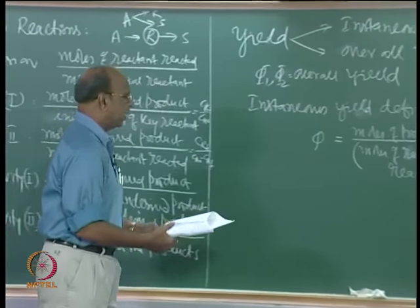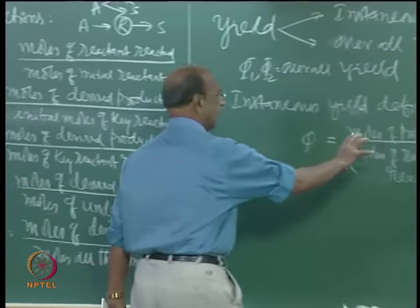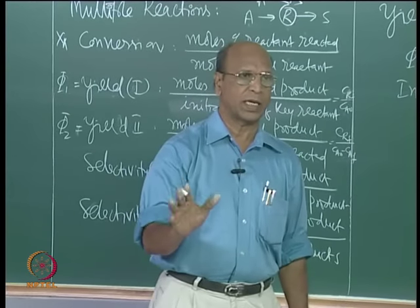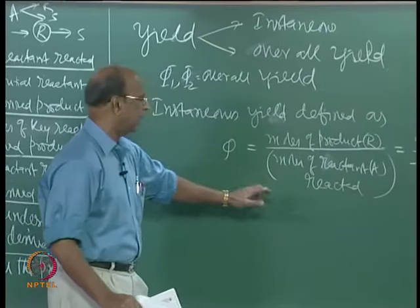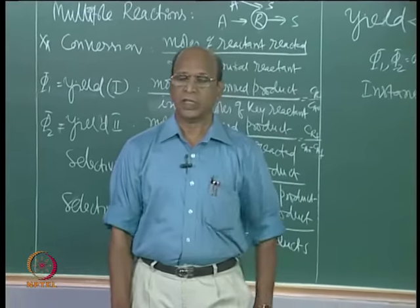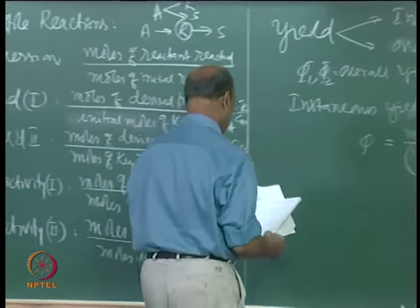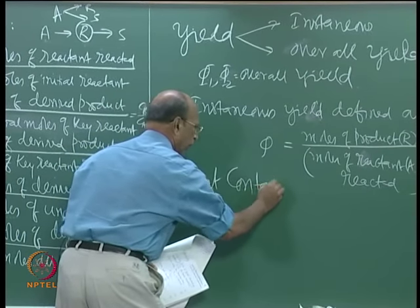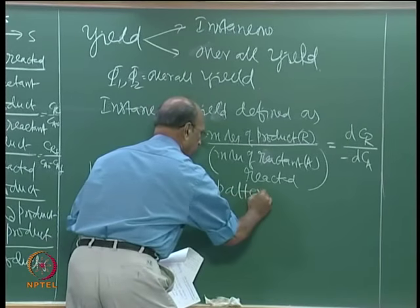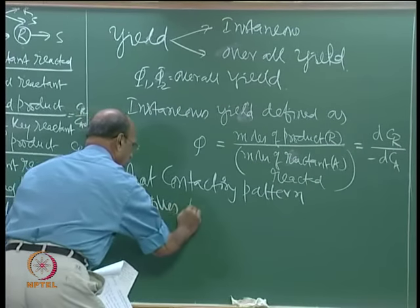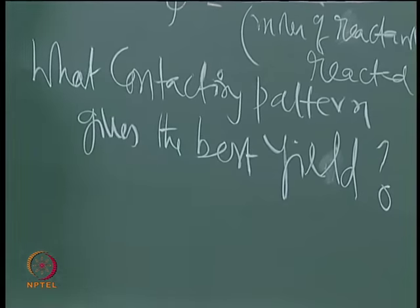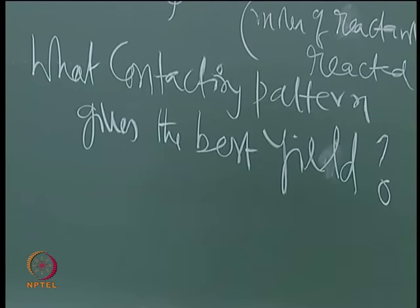This is the instantaneous yield. We have to find it depending on the reactor — whether plug flow, mixed flow, or batch. But right now, the key question is: what contacting pattern will give us the best yield? That is the question we need to address.